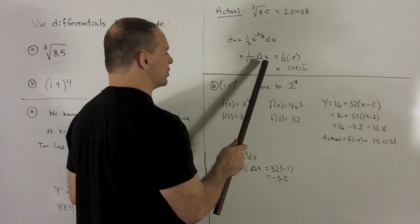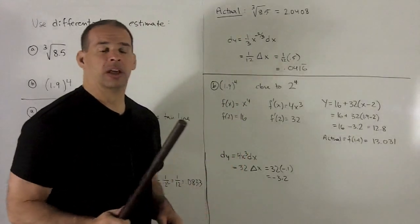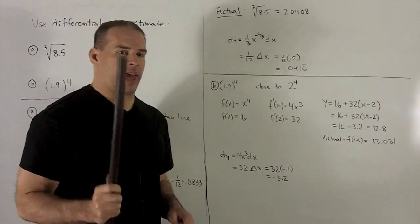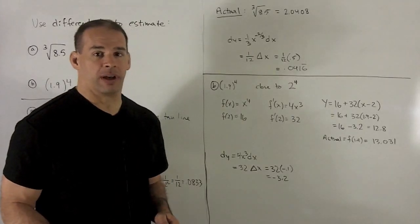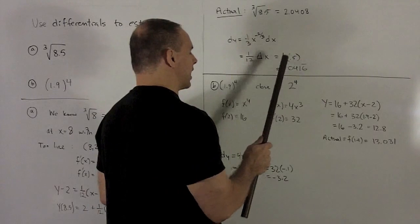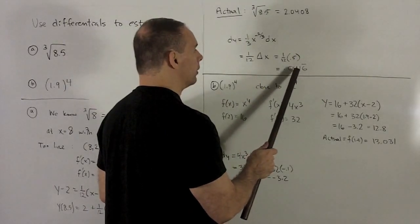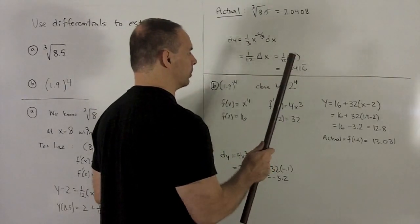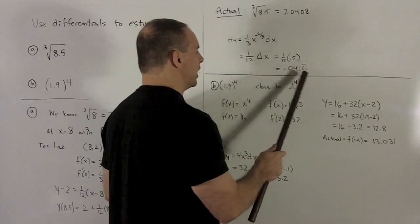And then we're going to put in our delta x, which is just the distance between the point we want to have and the point we're estimating off of. So that's going to give me one-half. That gives me one-twelfth times a half, which gives me 0.0416 repeating.